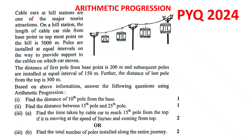The question is: cable cars at hill stations are one of the major tourist attractions. On a hill station, the length of a cable car ride from a base point to the topmost point on the hill is 5000 meters. So here is the base point and here is the top point, and this distance is 5000 meters.